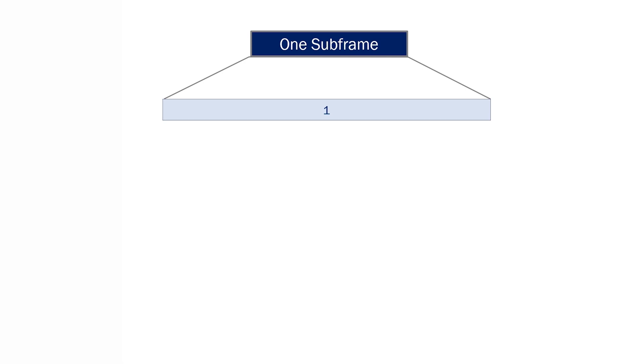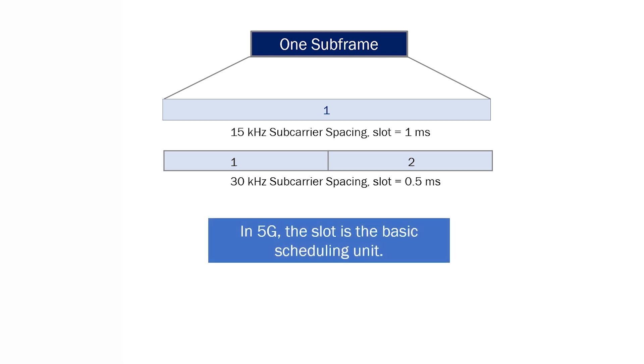In 4G and 5G, that one millisecond duration is known as the subframe time. In 4G, that subframe is divided into two slots, so the slot time is 0.5 milliseconds. The slot is the smallest granularity at which data can be scheduled for transmission.